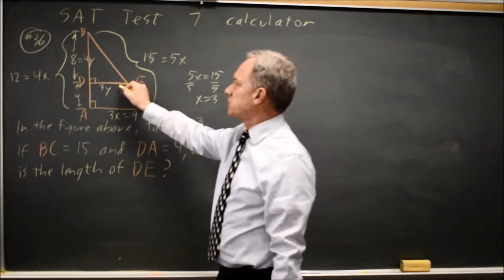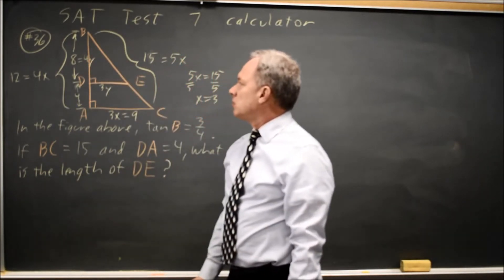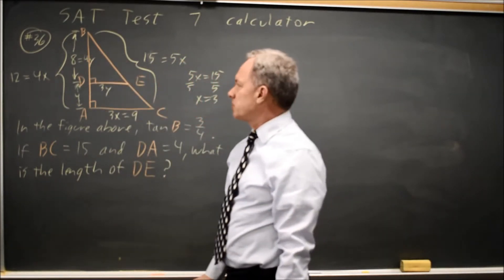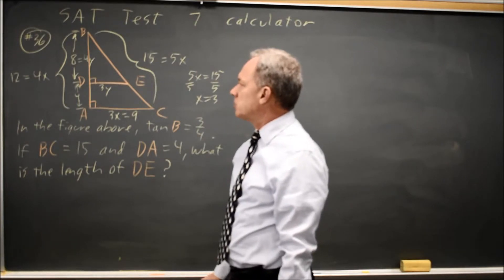Remember, tangent is the opposite side over the adjacent side, where we're excluding the hypotenuse from that ratio, just taking the two shorter legs.